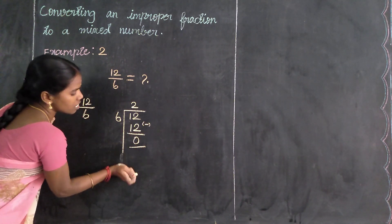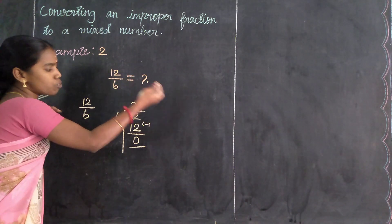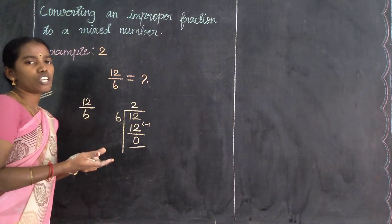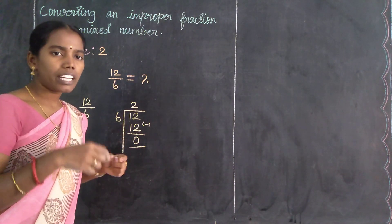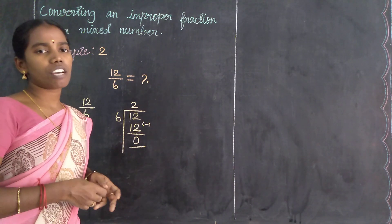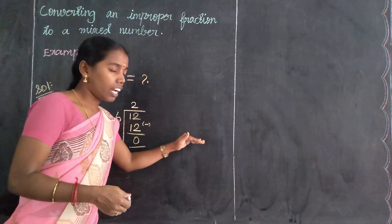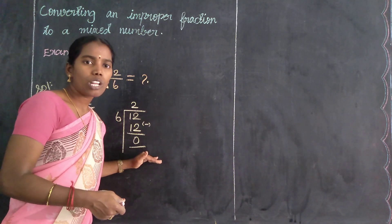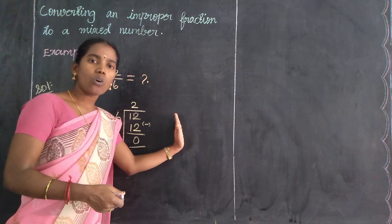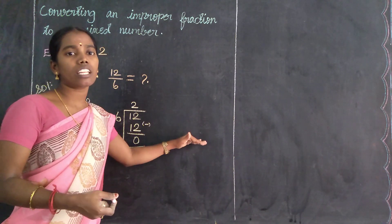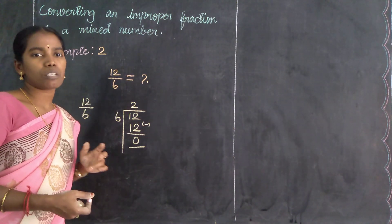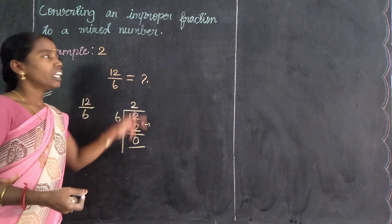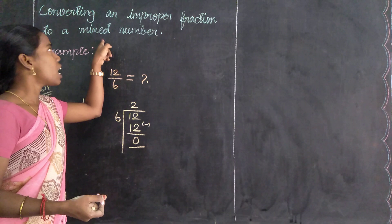Now, to change to a mixed number: the remainder value is 0. When finding a mixed number, the divisor value is the denominator, the remainder value goes in the numerator, and the quotient value is the whole number. If the remainder is 0, the mixed number conversion gives only a whole number. So in this fraction, the answer is only 2 — it is not a mixed number.